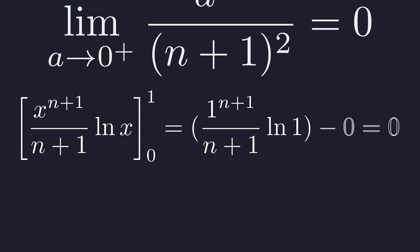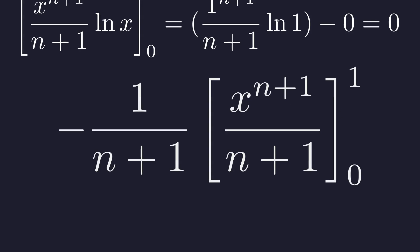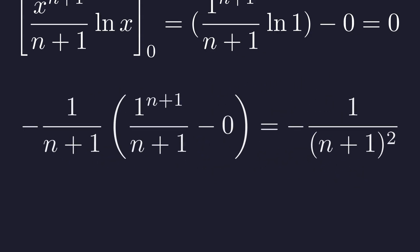At the upper bound x equals 1 and natural log of 1 is 0. So the entire boundary term vanishes. Sometimes the universe is kind to us. This is one of those moments. We're left with just this integral. Integrating x to the power of n gives x to the power of n plus 1 over n plus 1. Evaluating from 0 to 1 gives us 1 over n plus 1. So our inner integral equals negative 1 over n plus 1 squared. This is beautiful.